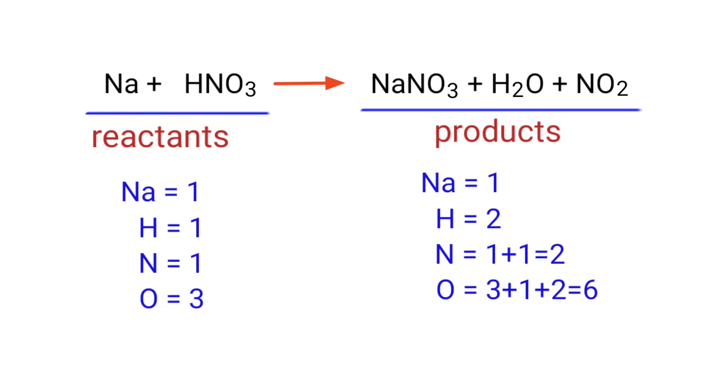In this equation we need to balance the hydrogen atoms first. To do this we need to put a coefficient of 2 in front of HNO3.